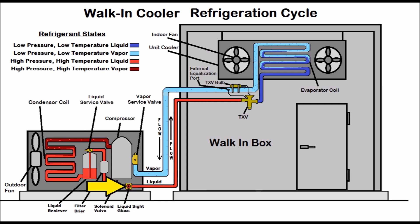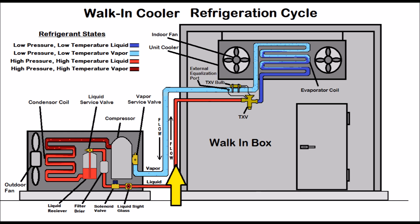Then the refrigerant goes through the liquid sight glass. The liquid sight glass could be in the outdoor unit, but more preferably it's right in front of the thermostatic expansion valve. It's best to have it closer to the TXV. As the sub-cooled liquid heads through the liquid sight glass, if you have a solid column of liquid the sight glass will be clear — unless there's an obstruction like a clogged filter dryer. The sub-cooled liquid then heads into the TXV as a high pressure high temperature sub-cooled liquid refrigerant.